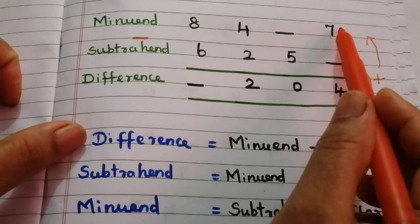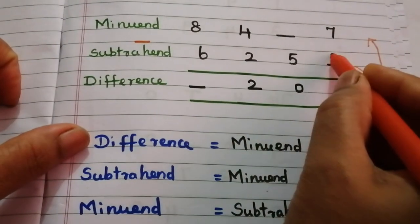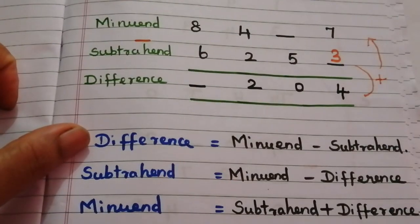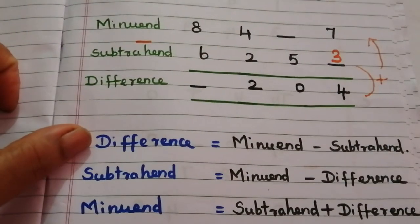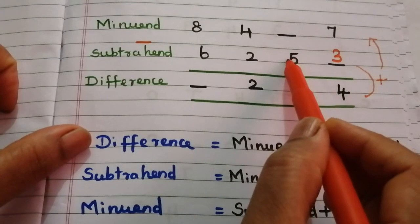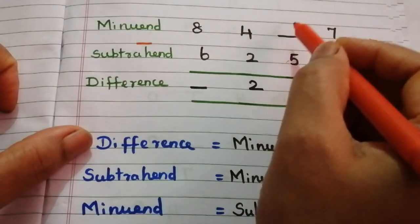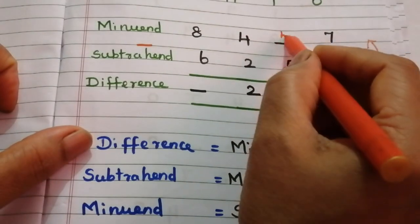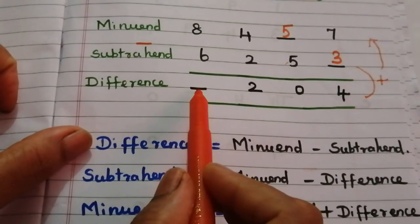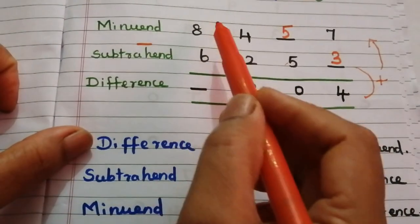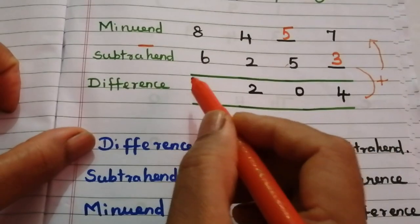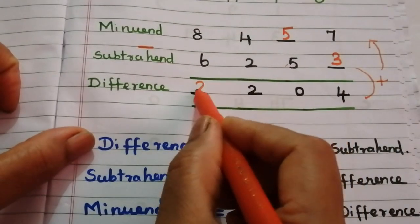To find this digit, we subtract 4 from 7: 7 minus 4 is 3. To find the next digit, we add 5 plus 0, which is 5. To find this digit, we subtract 6 from 8: 8 minus 6 is 2. So the missing numbers in problem A are 5, 3, and 2.